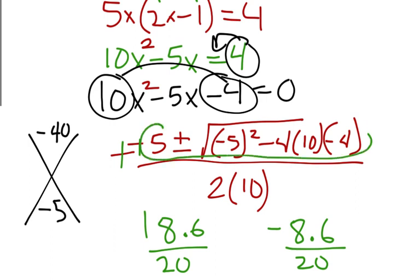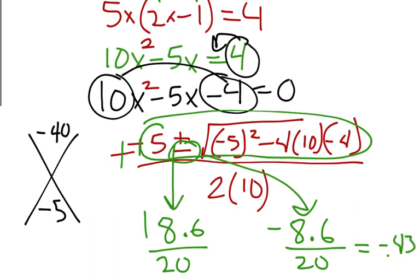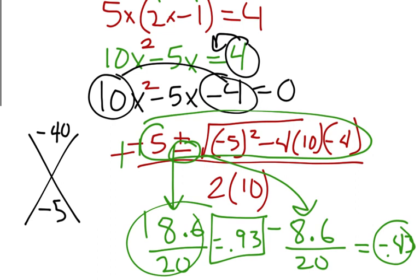I punched the top into the calculator with a plus sign and got the 18.6, and then I punched it in with a minus sign and you should get the negative 8.6. So the actual final decimal should be negative .43, and then my other answer should be .93. Now, the .93 is the only answer I really care about because we don't like negative answers with logs. So .93 would be your final answer for this particular problem.